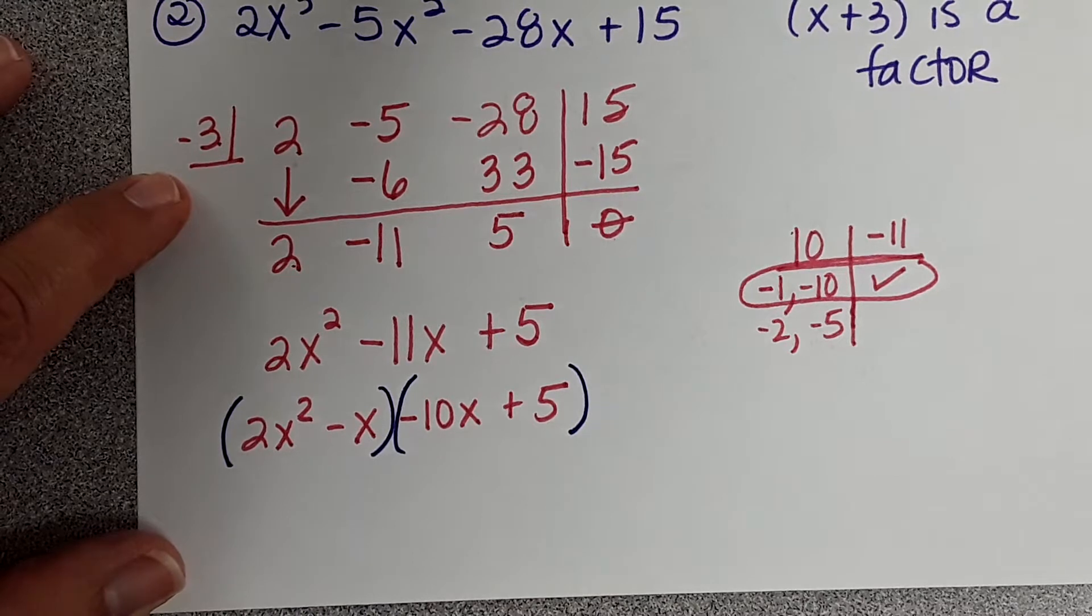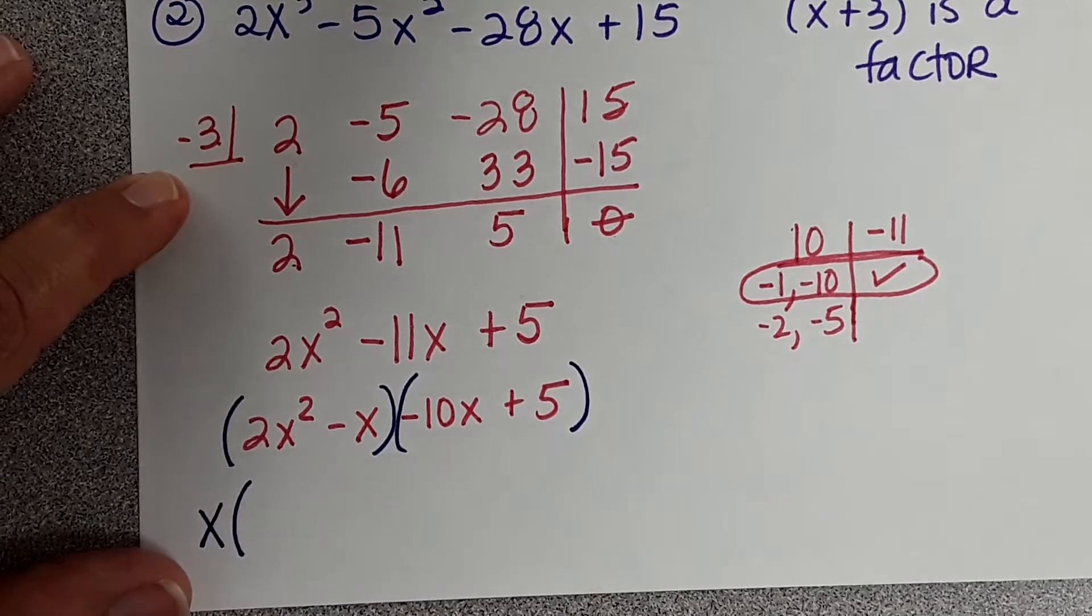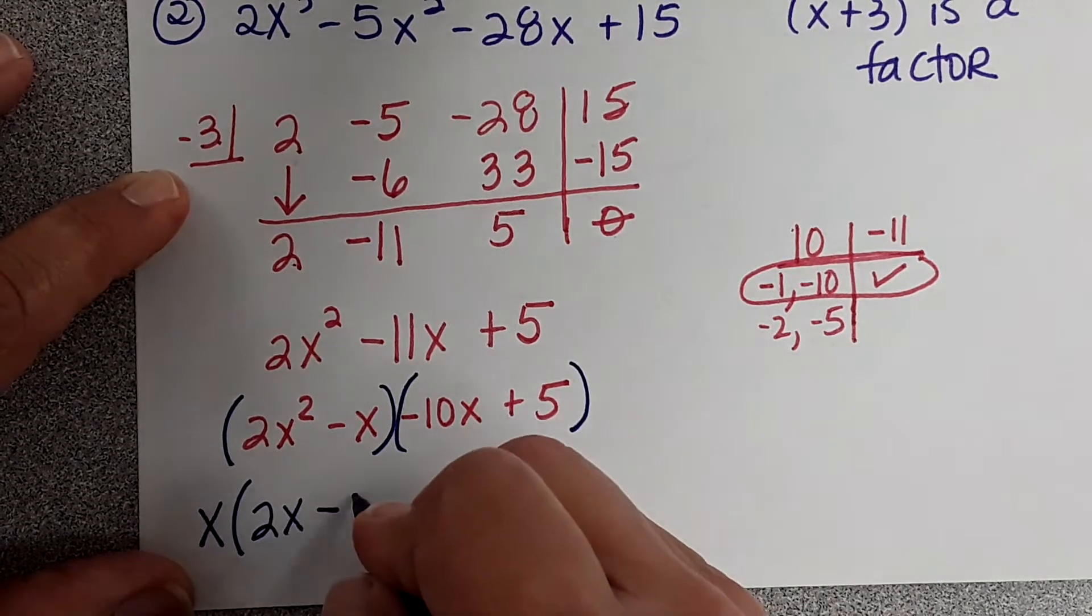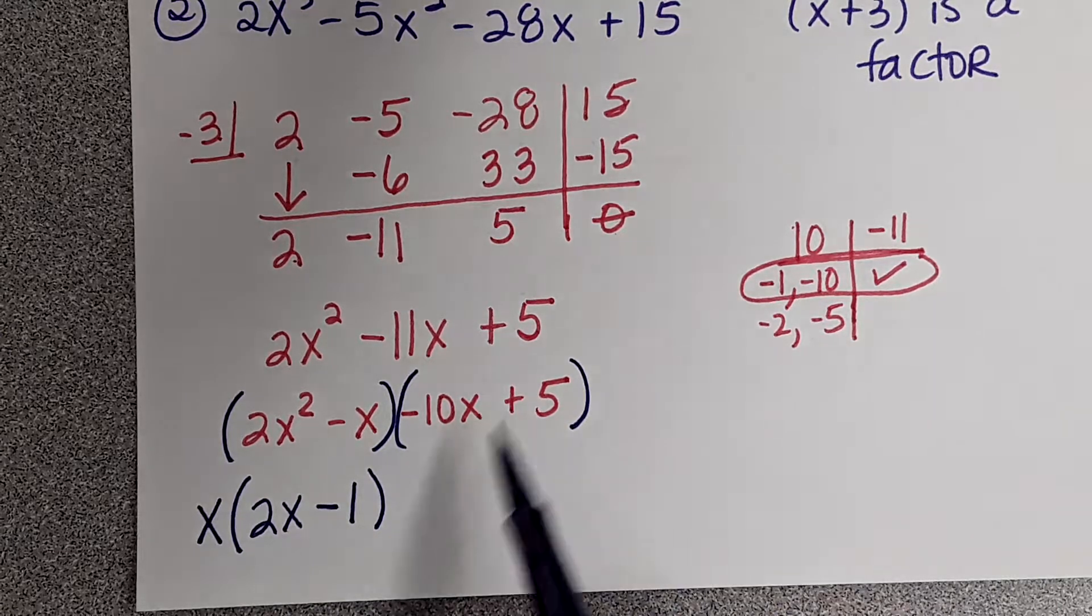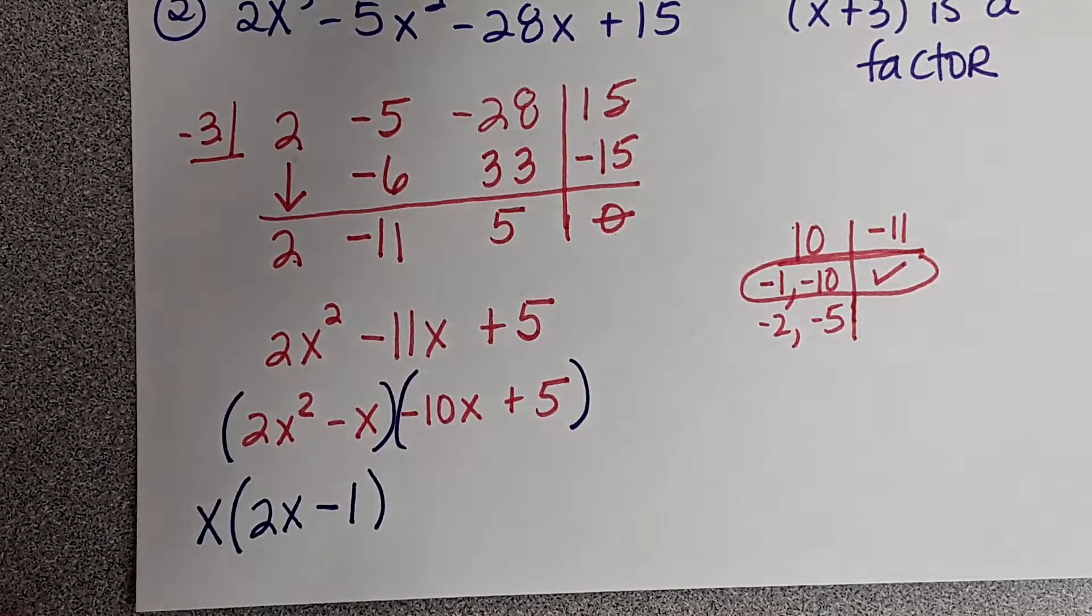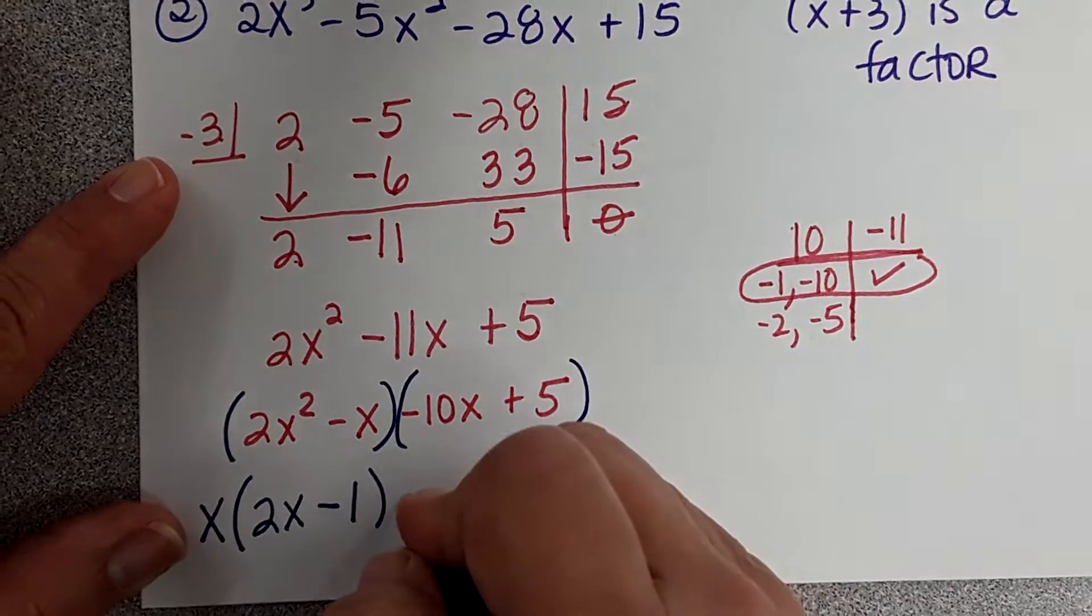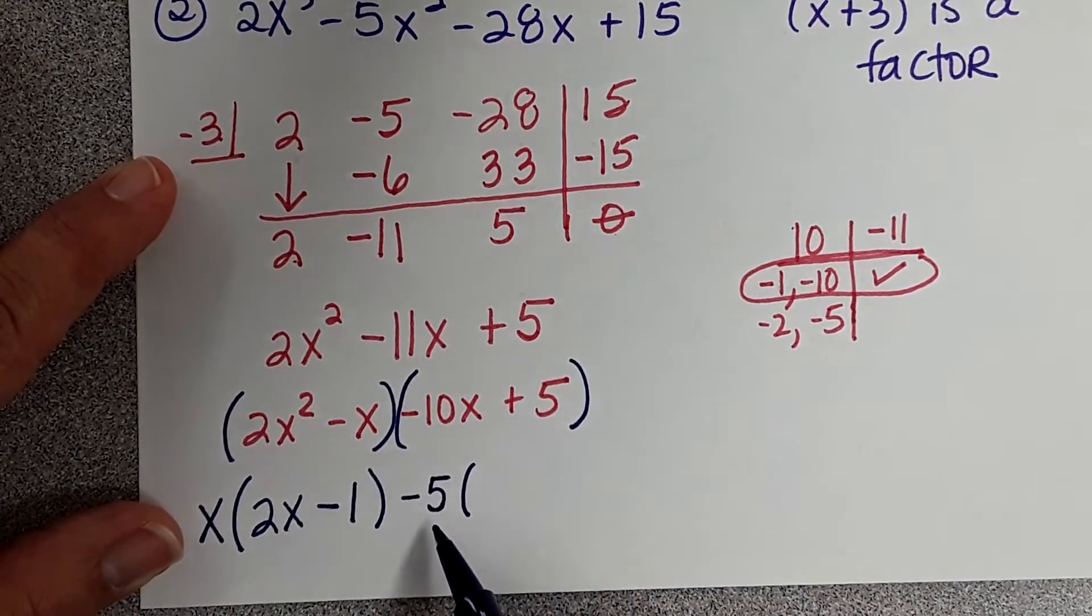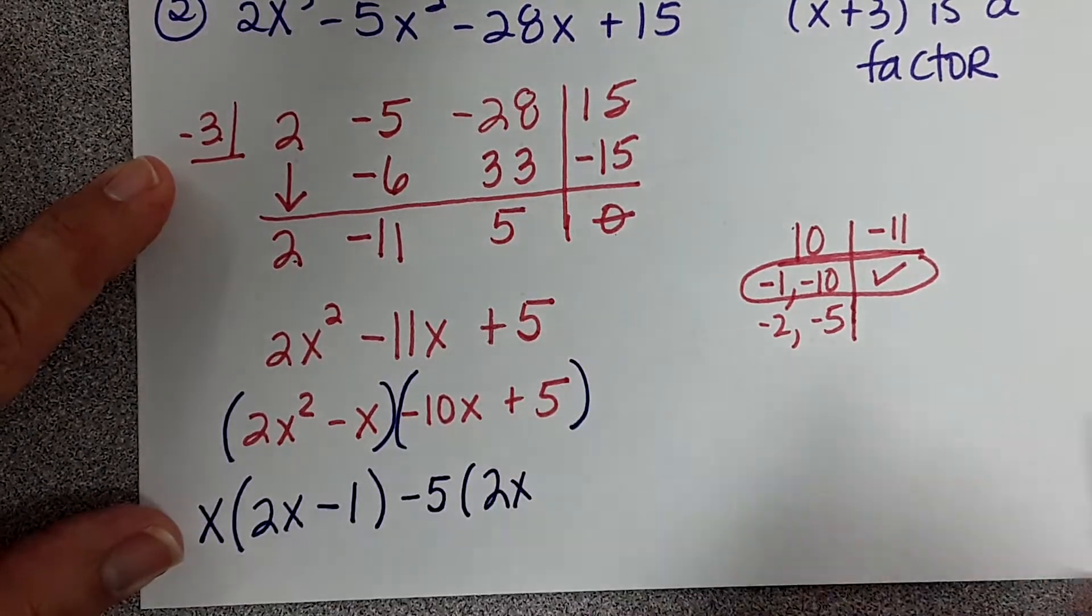Now what do they have in common? 2x squared and x. That's our GCF. So now what's left inside the parentheses? 2x minus 1. We took the x out, so the squared goes away. Now what does negative 10x and 5 have in common? A 5. If this term is negative, you have to pull the negative out. So I'm going to pull out a negative 5. What is negative 10x divided by negative 5? 2x. And then what is 5 divided by negative 5?